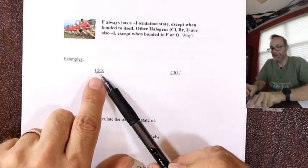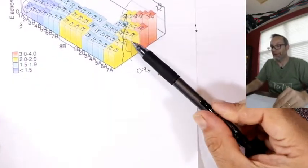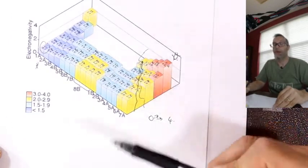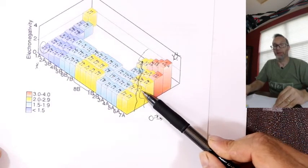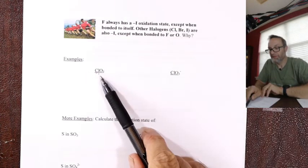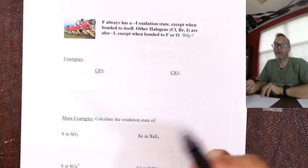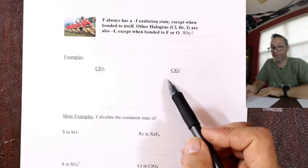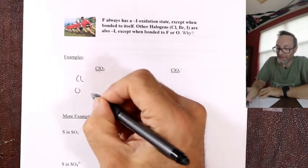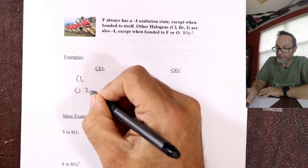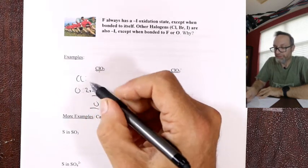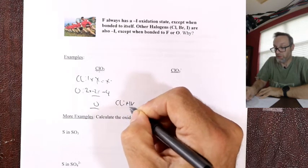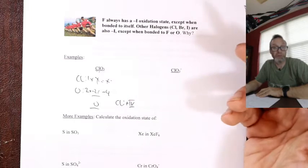When chlorine is bonded to oxygen — or any of the lower halogens like iodine, bromine, chlorine — they're all weaker than oxygen in terms of electronegativity, so oxygen will win, become minus, and the lower halides will have to go plus. For ClO₂: oxygen is the winner, chlorine is the loser. Two oxygens times minus two equals minus four. One chlorine times X must give zero. X equals plus four. Chlorine in chlorine dioxide has a plus four oxidation state — it's an accounting thing.